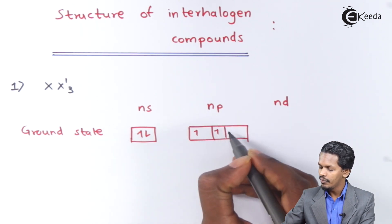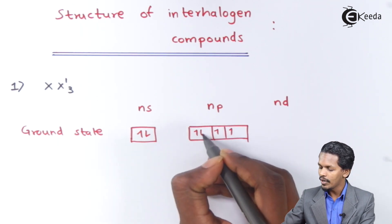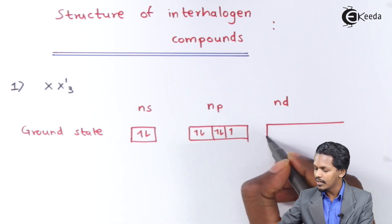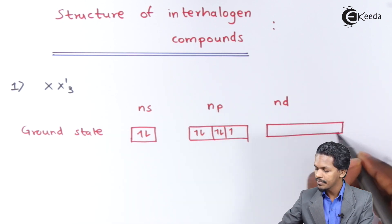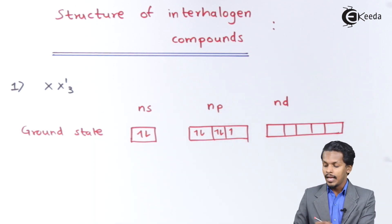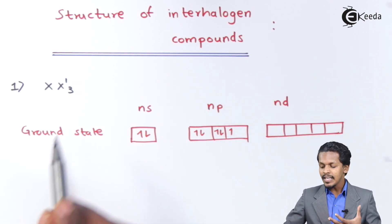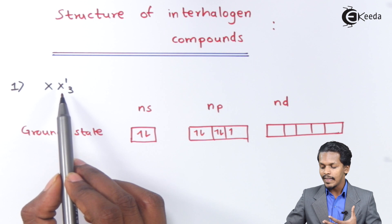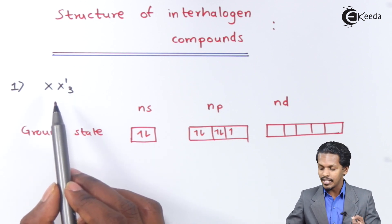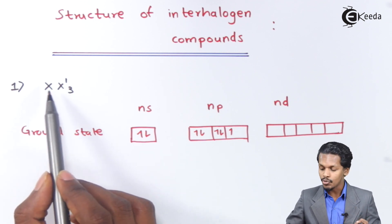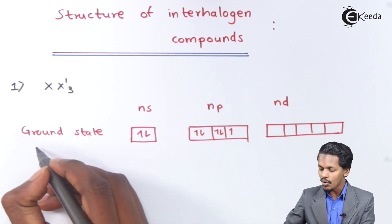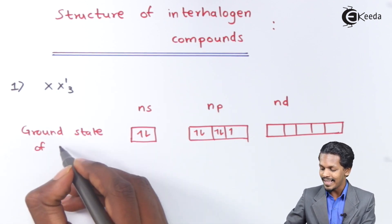So there are 1, 2, 3, 4, and 5 electrons in the np subshell, and the d orbital does not contain any electron in the ground state. We need three other halogen atoms attached to X, but in the ground state we have only one unpaired electron.